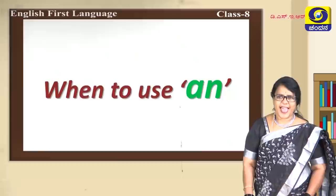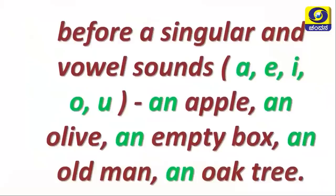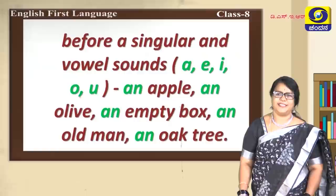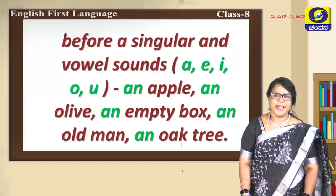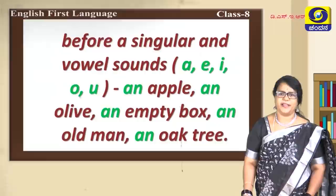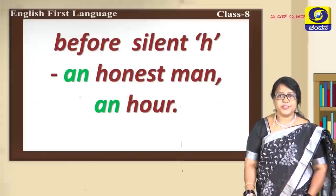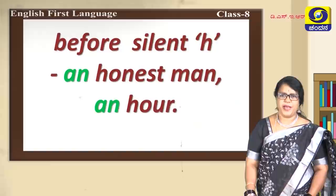Let's see when to use 'an'. 'An' is used before a singular word with a vowel sound: a, e, i, o, u — an apple, an olive, an empty box, an old man, an oak tree. 'An' is also used before a silent 'h': an honest man.